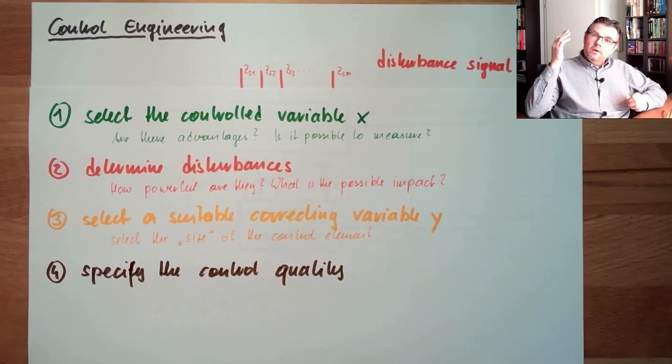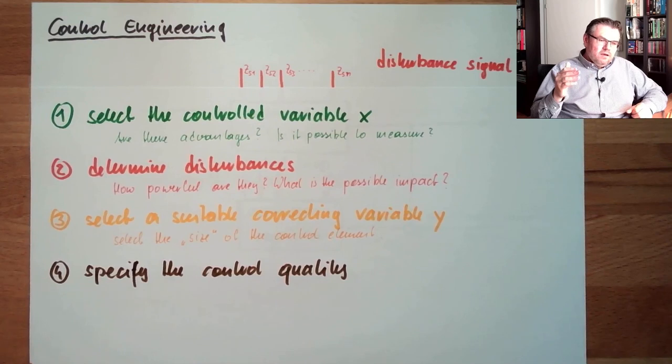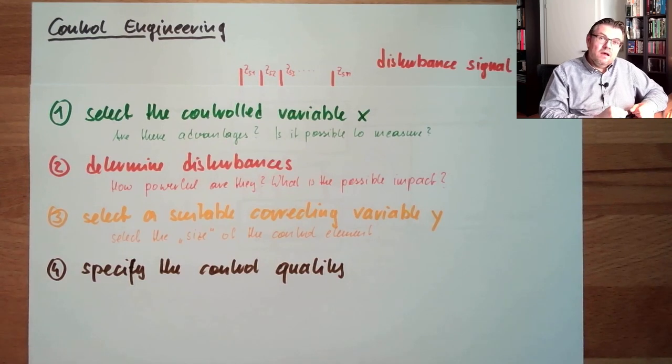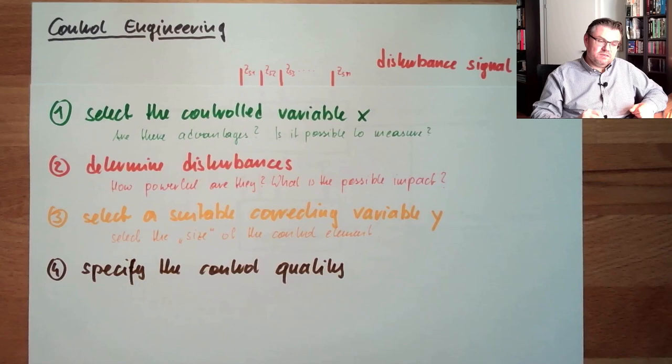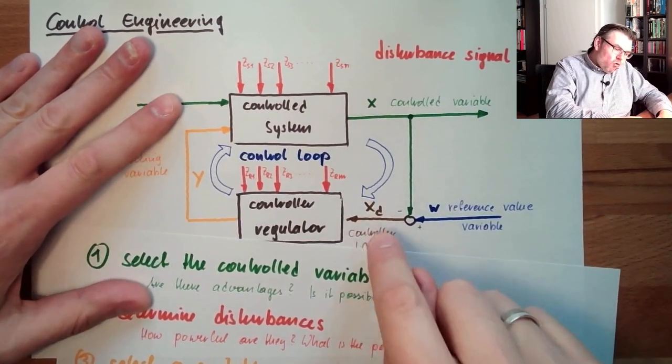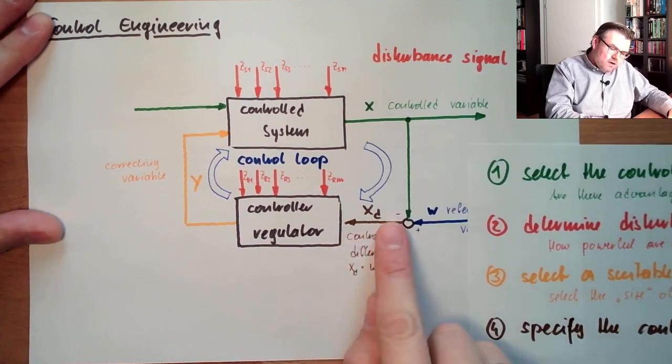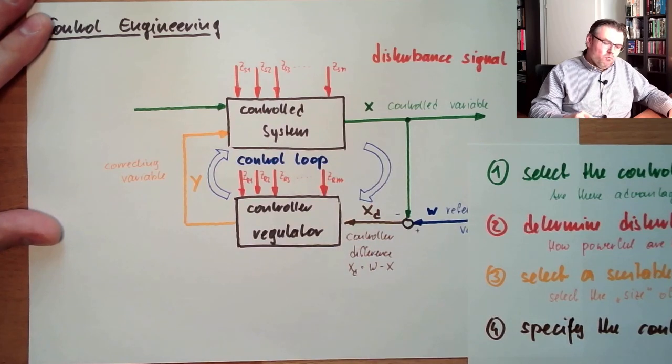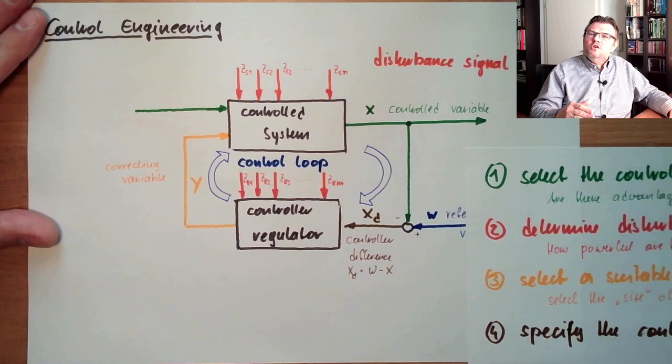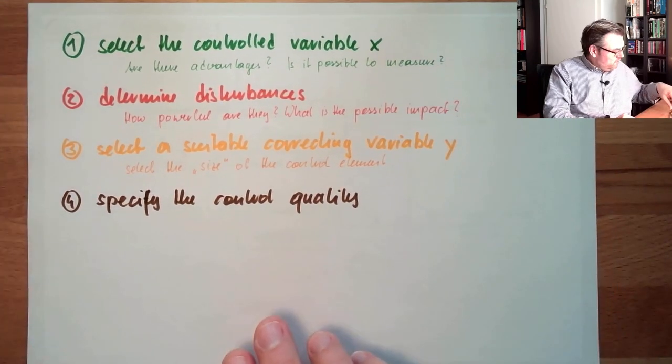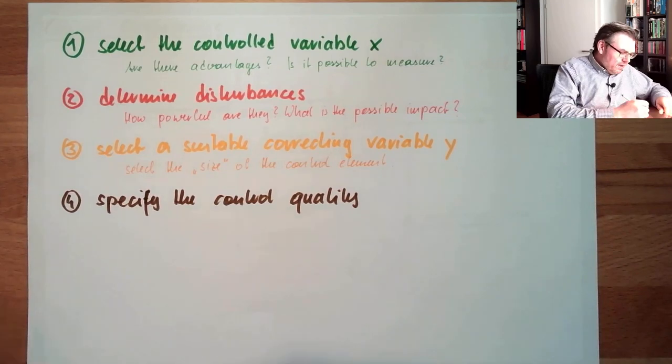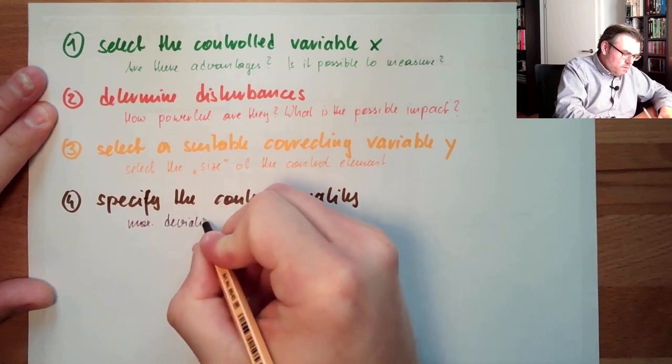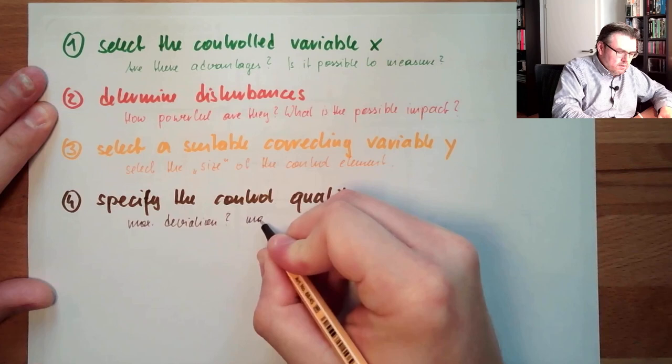Specify the control quality. What does it mean? I have to think about how fast it needs to be. What is the reaction time? What is the necessary reaction time of my control element? And how close we have to get to the reference variable. How much controller difference is allowed there? What is the time constraints of this controller difference, of this controller deviation? And what is the allowed deviation? So we are doing things like we are thinking about the maximum deviation, we are thinking about the maximum reaction time.